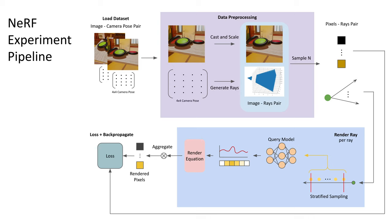The experiment pipeline for NeRF is shown as follows. First, the dataset is loaded as image-camera-pose pairs. Then, the images are cast and scaled, and the pixel rays are generated from the camera pose. During training, pixel rays pairs are sampled from the images for training. For each ray, using stratified sampling, the neural network is queried at the sampling points along the ray to use the densities and colors along the ray.